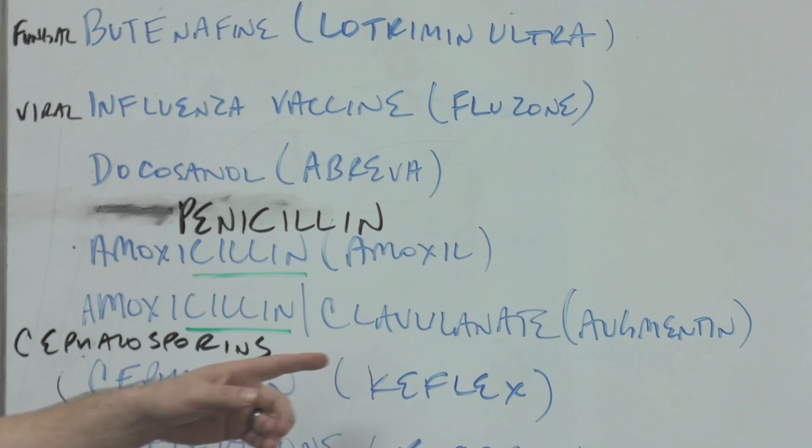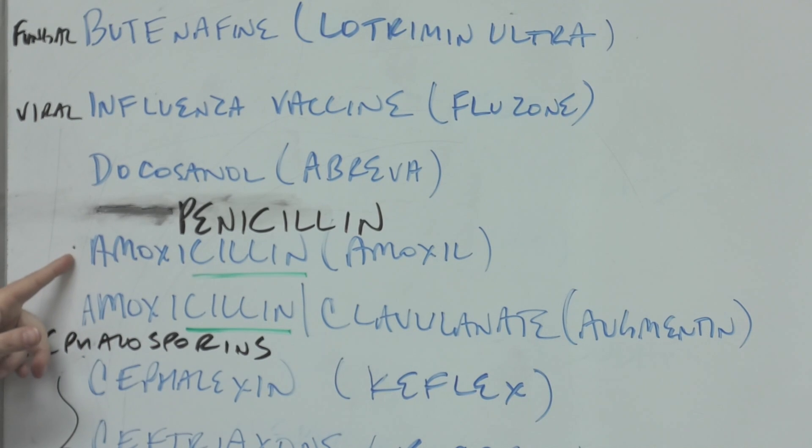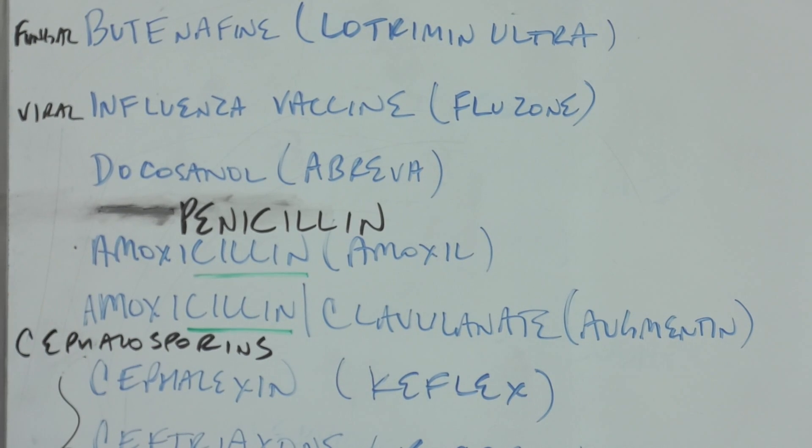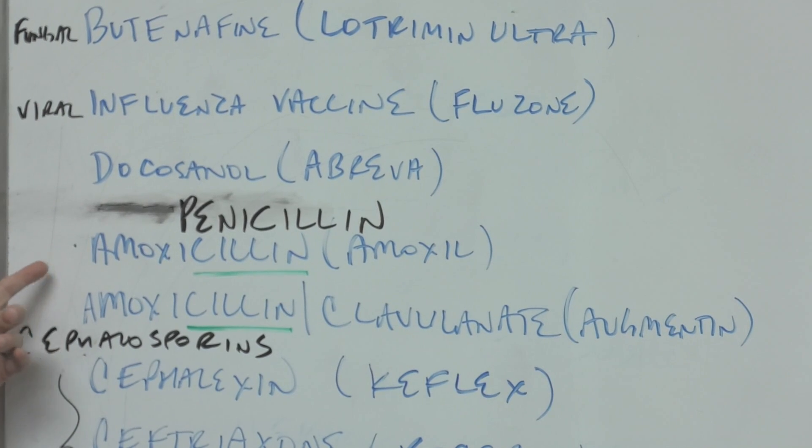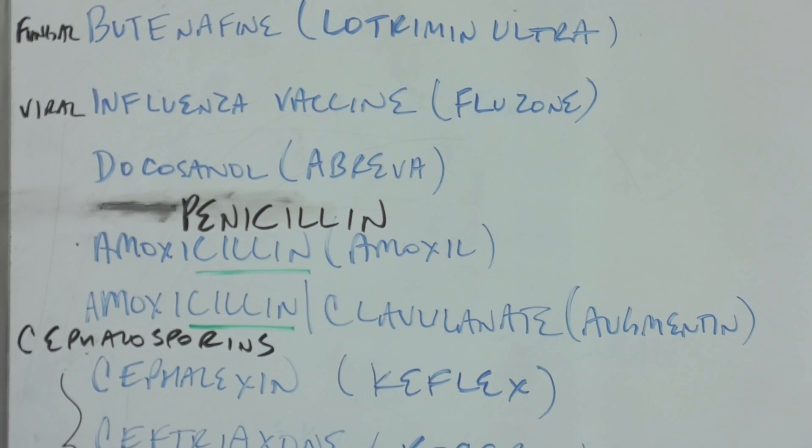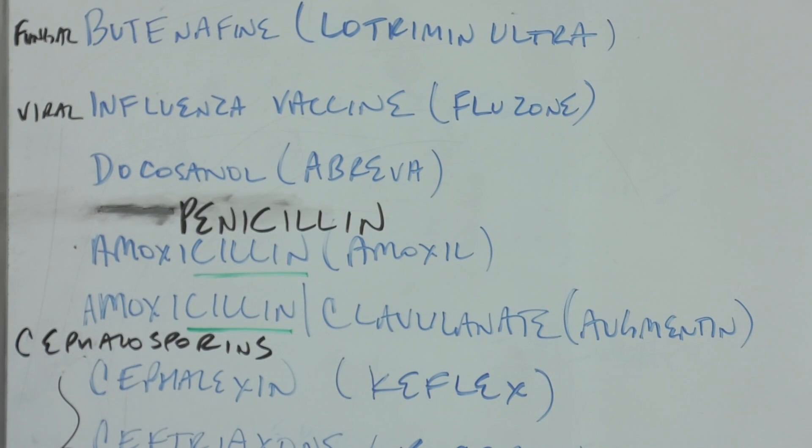But what's this clavulonate? Sometimes the bacteria can secrete an enzyme which can make the antibiotic ineffective. That beta-lactamase enzyme can destroy the amoxicillin, but if you add this clavulonate, you can augment—and you see that word augment in Augmentin, the brand name—this amoxicillin.